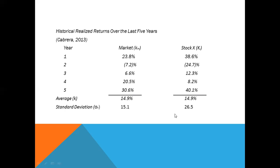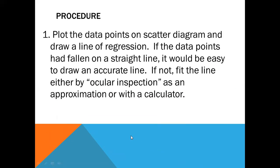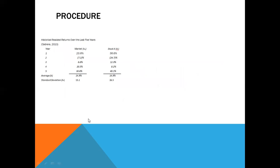The average is 14.9 percent both for the market and the stock, and the standard deviation for the market is 15.1 and the stock X is 26.5. Now let's compute for the beta coefficient. First, we're going to plot the data points on a scatter diagram and draw a line of regression. If the data points had fallen on a straight line, it would be easy to draw an accurate line. If not, fit the line either by ocular inspection as an approximation or with a calculator.